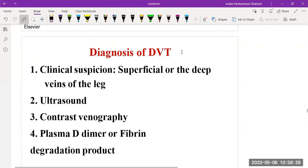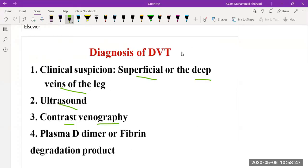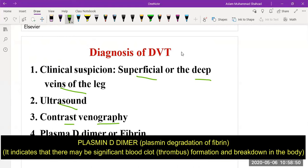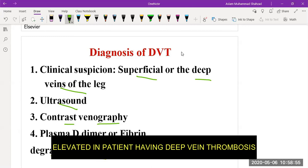How to diagnose deep vein thrombosis: the main thing is identifying the site of injury in the superficial or deep leg veins. It can be identified using ultrasound or contrast venography, or with the help of an important biomarker — plasmin D-dimer, also known as fibrin degradation product. This marker can be elevated in patients having deep vein thrombosis.